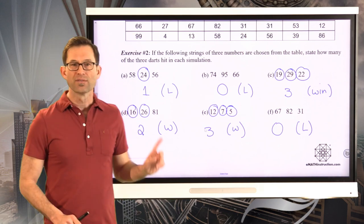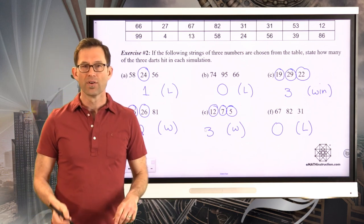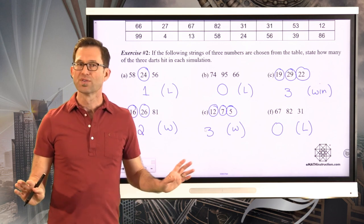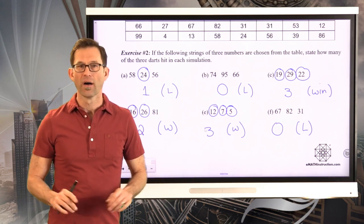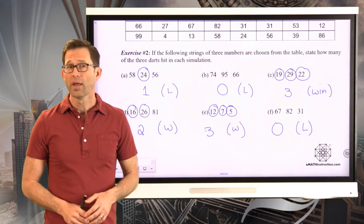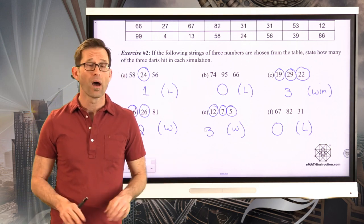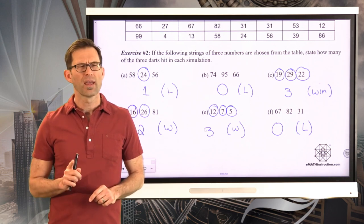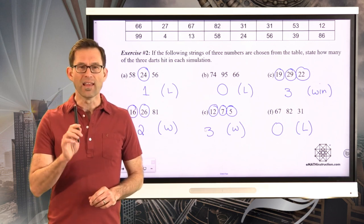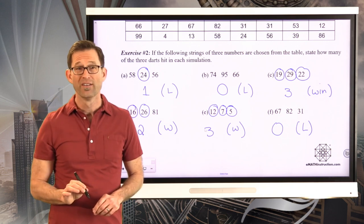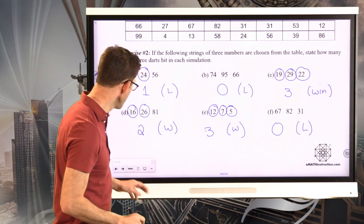So if I get two in or three in, the darts in, I get a win. Zero, one, I get a loss. So it almost seems like it should be 50-50. Do you know what I mean? I mean, if I get zero in or one in, I lose the game. If I get two in or three in, I win the game.